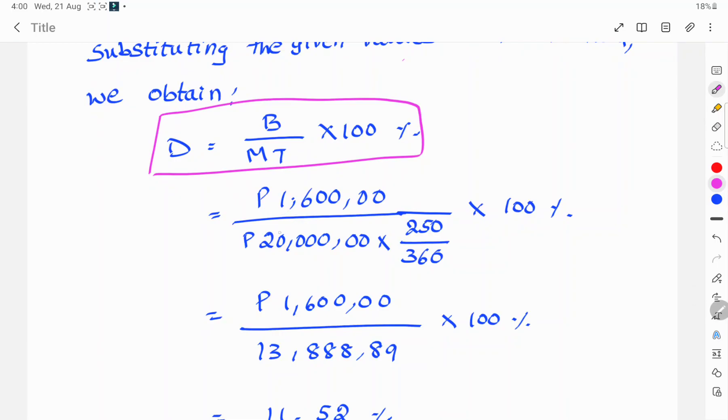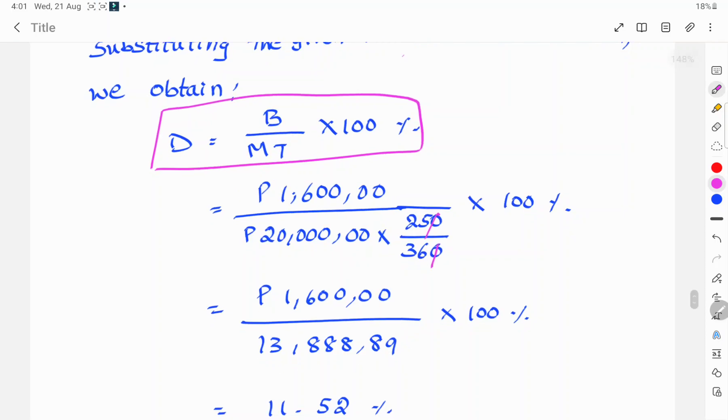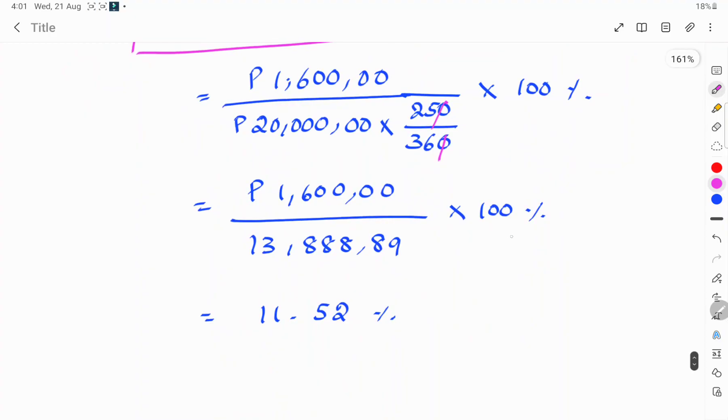So, B is 1 lakh 60,000 by MT. M is 20 lakhs into T is 250 by 360 into 100. Here the zeros will be cancelled. Simplifying these equations, we get 1 lakh 60,000 by 13 lakhs 88,889 into 100%.